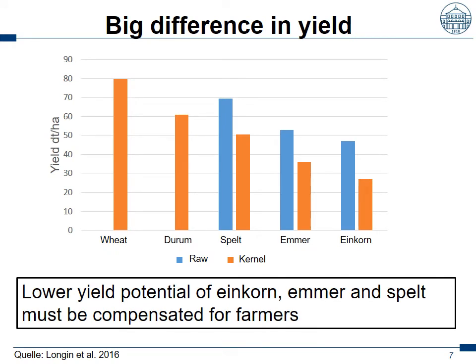Let's go to the particular actors and look at their advantages, risks, and what they have to care about when using ancient grains. Let's start with the farmer. First of all, he has to grow them and harvest something — which is at the end a yield, shown here in decitons per hectare (100 kg per hectare). We did a very correct trial. We used 15 varieties of bread wheat, 15 of durum wheat, and 15 each of spelt, emmer, and einkorn.